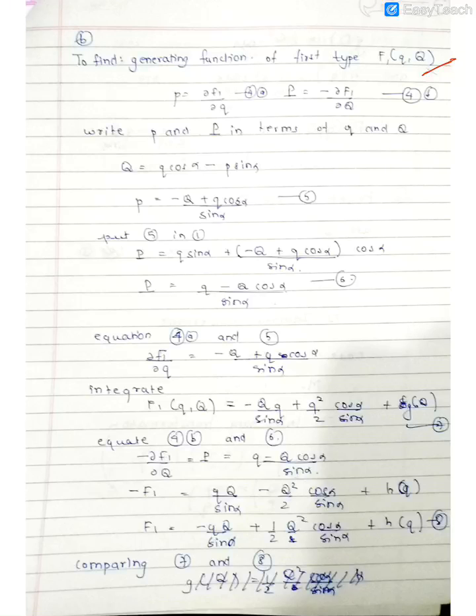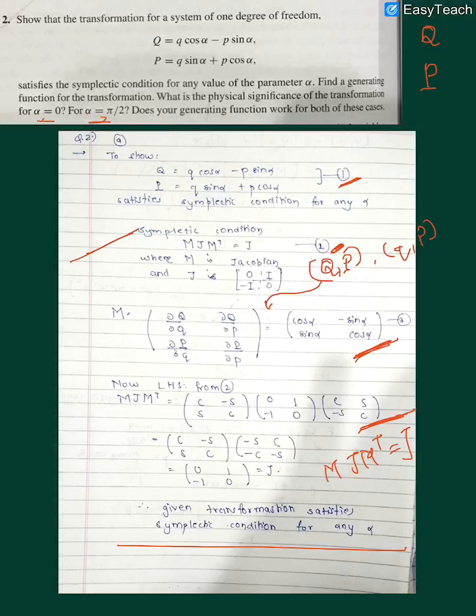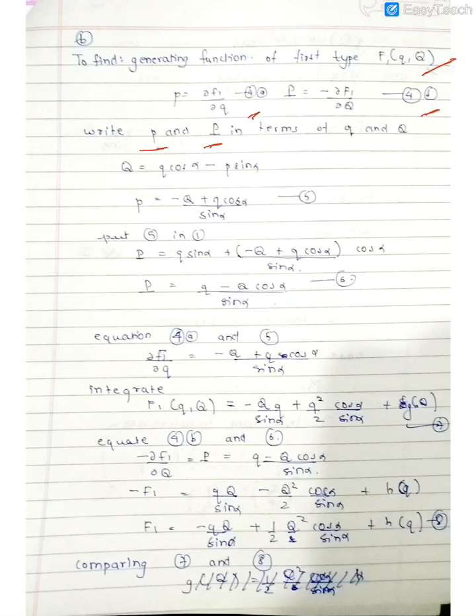We have taken the first type of generating functions, that is F1 of small q and capital Q as a function of small q and capital Q, wherein the small momenta is given by partial derivative of F1 with respect to small q, and capital P is given by minus F1 by capital Q. Now we write small p and capital P in terms of small q and capital Q.